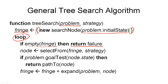Initially there will be at least one node — the node created from the initial state. So in the next step we take our set of fringe nodes and select one node from the fringe, using the strategy to decide which node to select first. This is the next node we will explore. We apply the goal test to the state corresponding to this node. This also catches the case where our initial state was actually a goal state, because we apply the goal test before doing anything else.